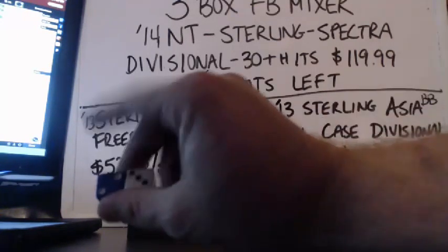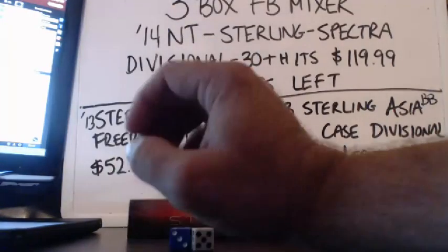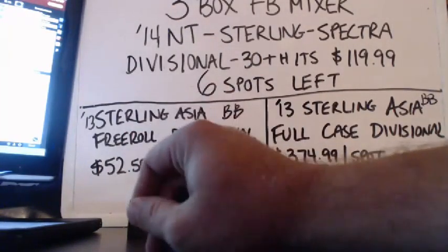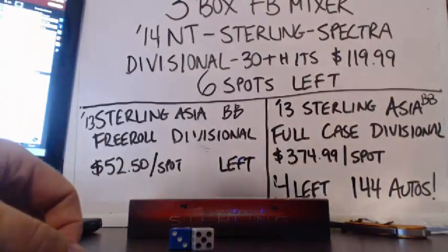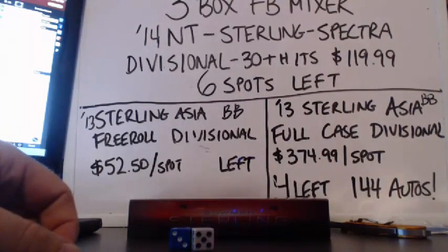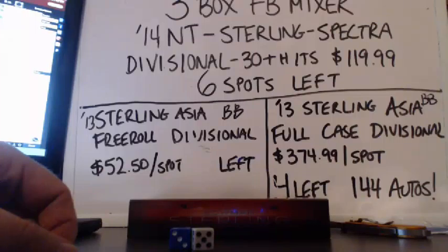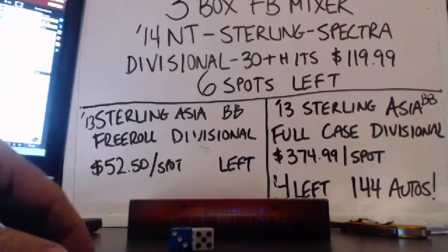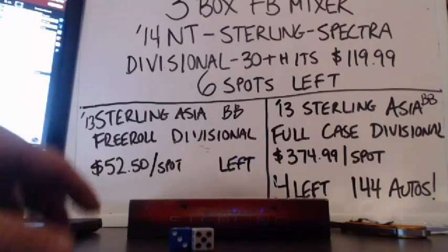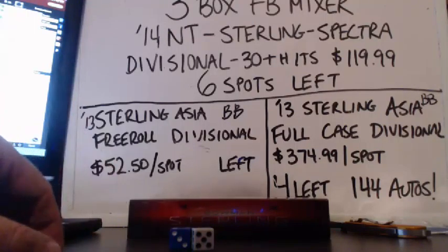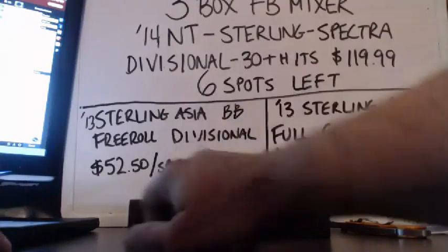What we're going to do is roll the dice to get a number of times to run the randomizer. The final list on the randomizer corresponds to the following divisions: Spot 1 AL East, Spot 2 AL Central, Spot 3 AL West, Spot 4 NL East, Spot 5 NL Central, Spot 6 NL West. In this break, in order to get a free roll, if you have no autos in your division you'll be entered into a random for a free spot in the next box. If every division gets autos, the free spot will be randomized amongst everybody in the break.